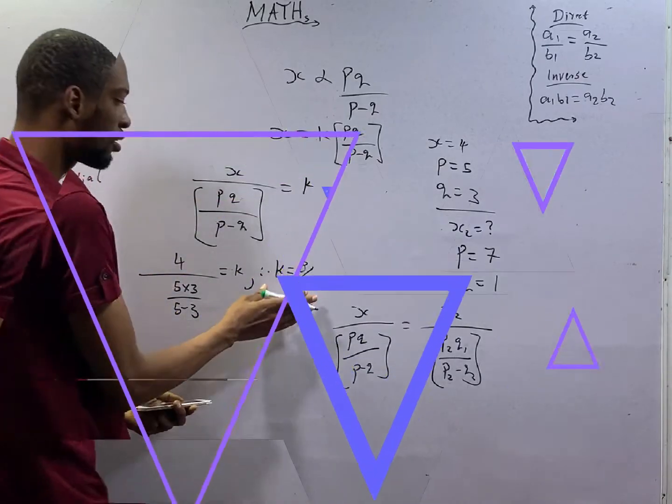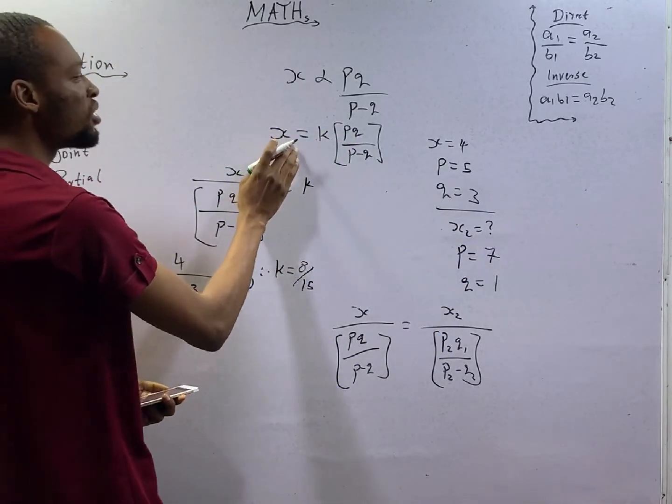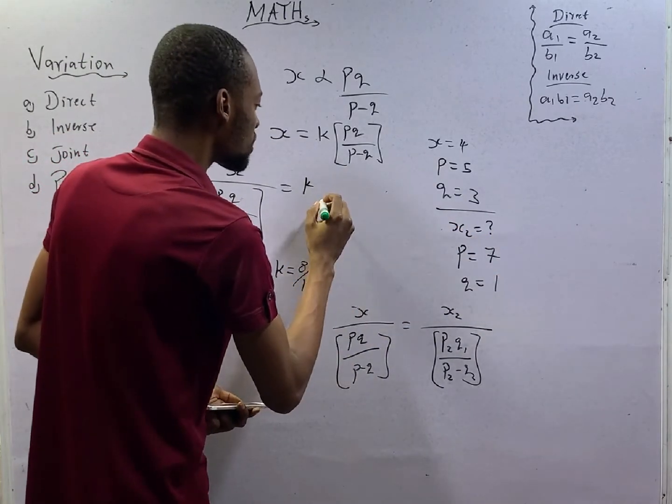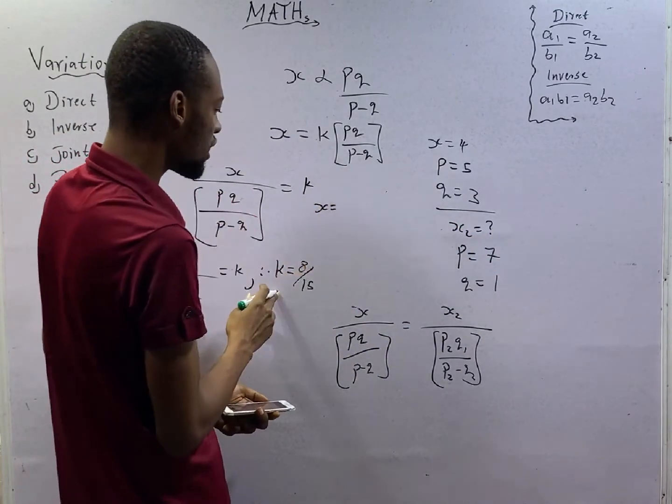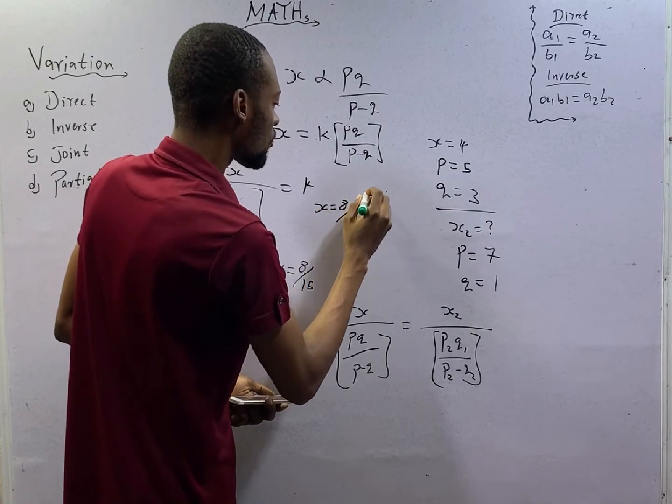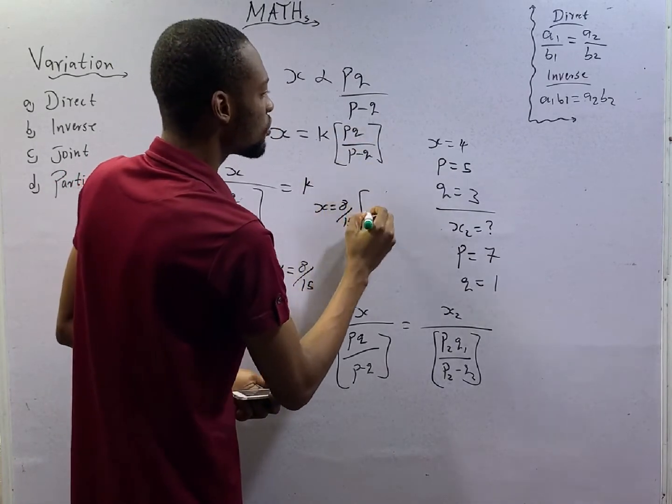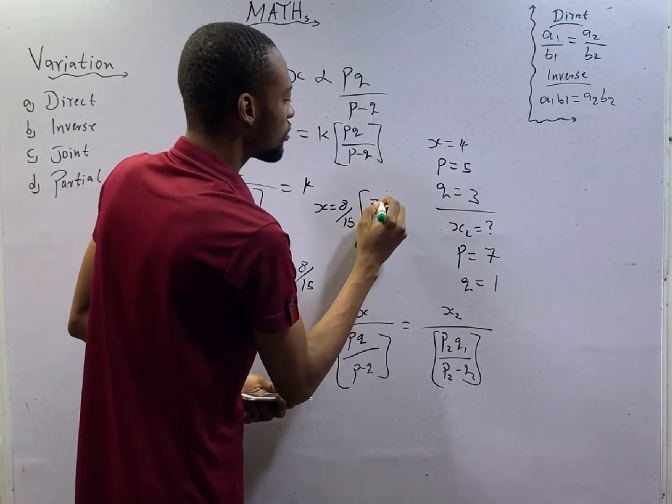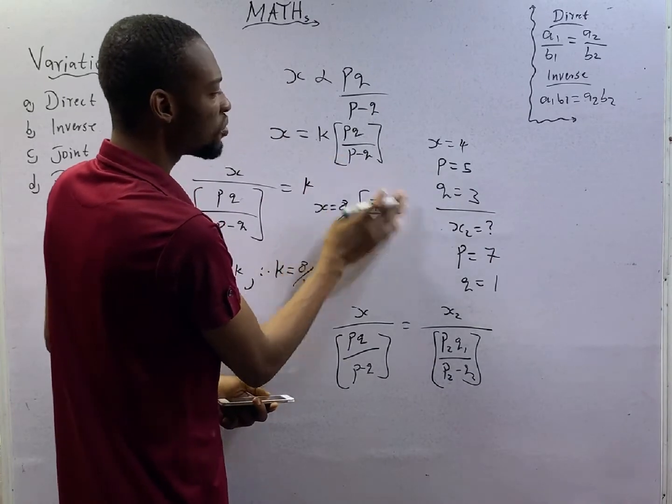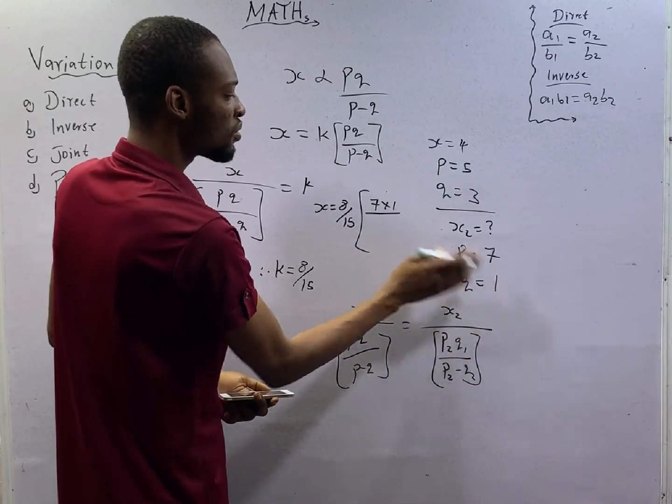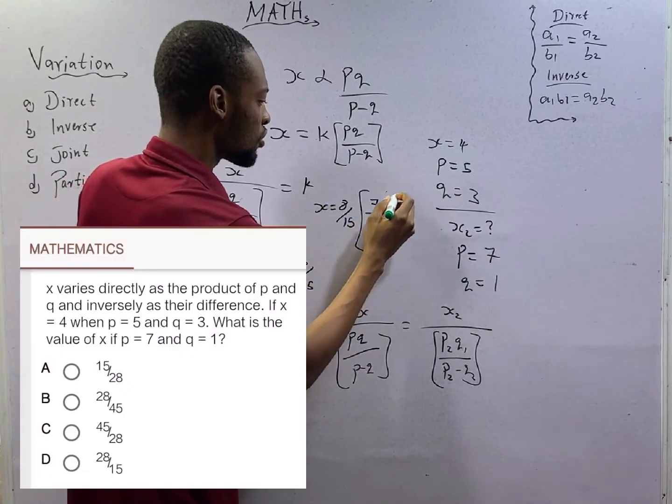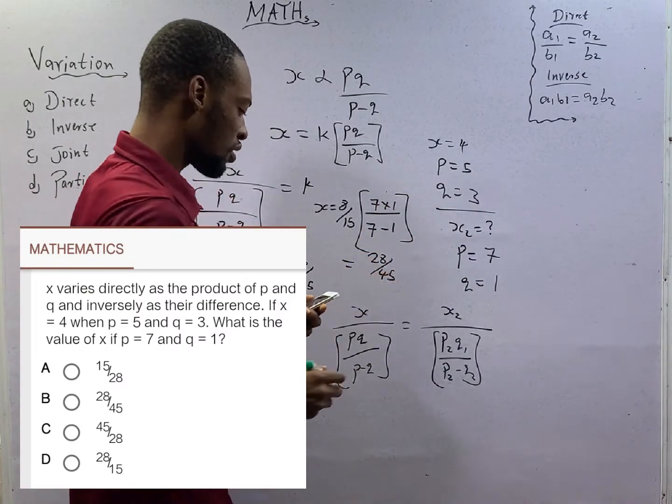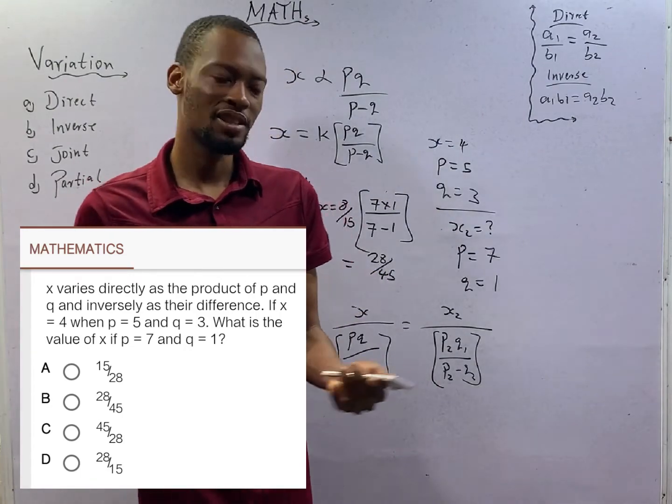Now that we've gotten the value of K, we'll come back to this equation to find the second value of S. The second value of S becomes S equals K, 8 over 15, times P times Q, 7 times 1, over P minus Q, 7 minus 1. This will give you 28 over 45. Option B is the correct option.